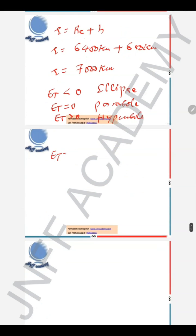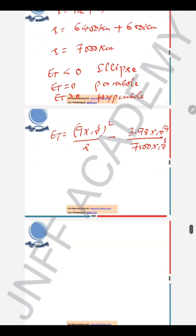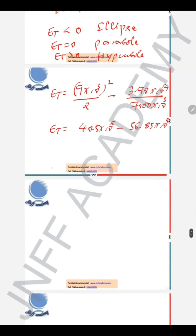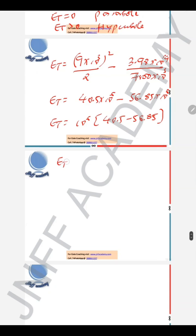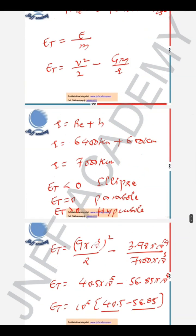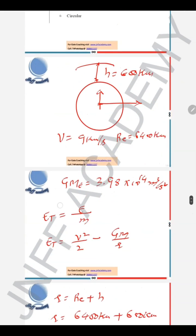Let us solve: E_t = (9 × 10³)² / 2 − (3.98 × 10¹⁴) / (7000 × 10³) = 40.5 × 10⁶ − 56.85 × 10⁶. Since 56.85 is larger, the result is clearly less than zero. Therefore this trajectory is an ellipse, and that is the answer.